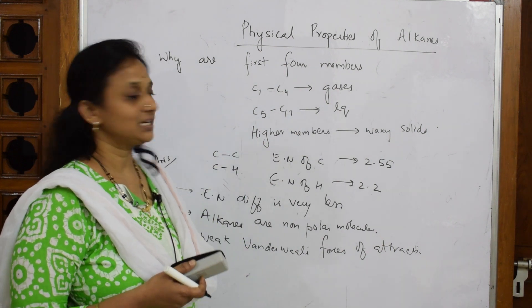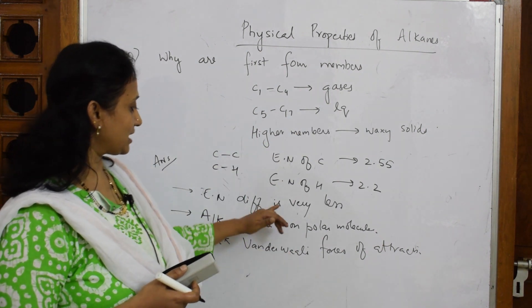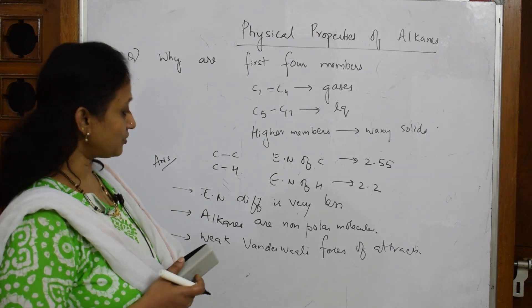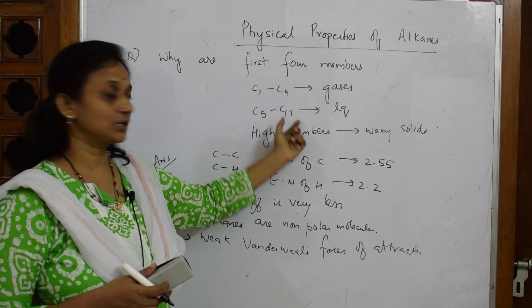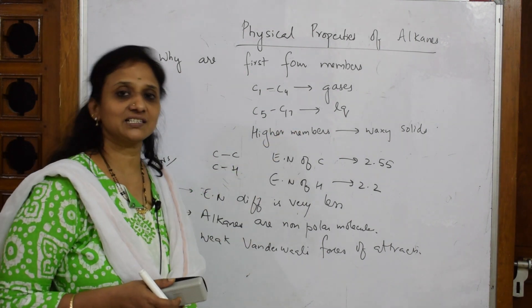That's the reason. Because of this, you will write these three points, then you will finish off saying that hence C1 to C4 are gases, C5 to C17 are liquids, the higher members are waxy solids.